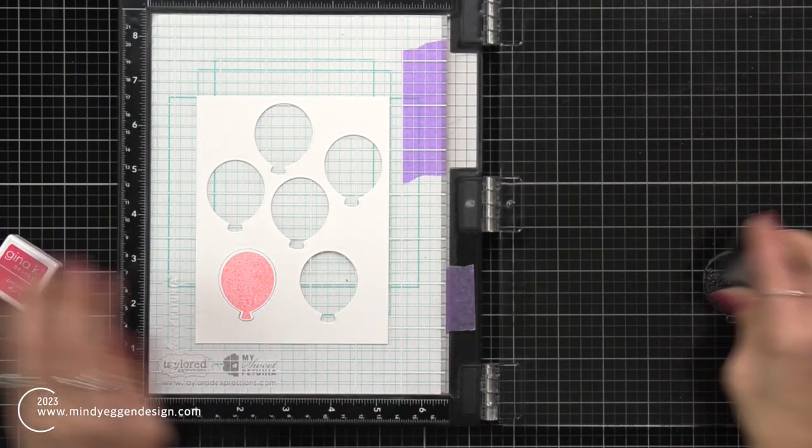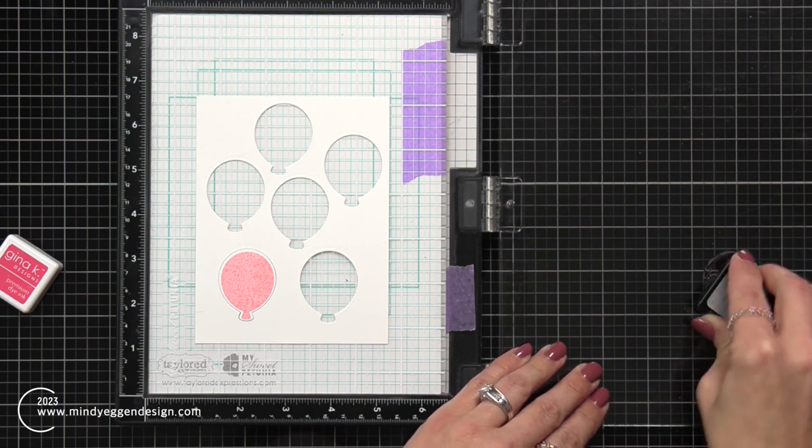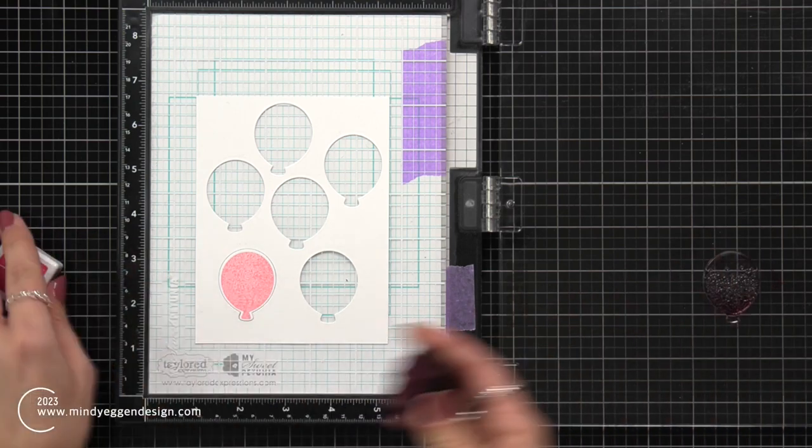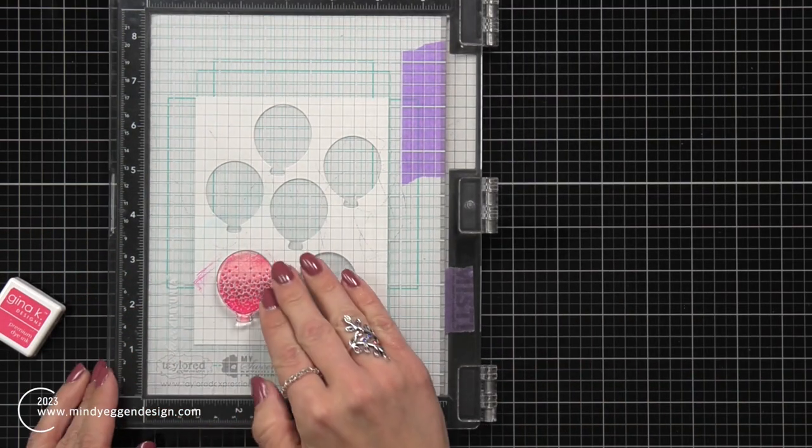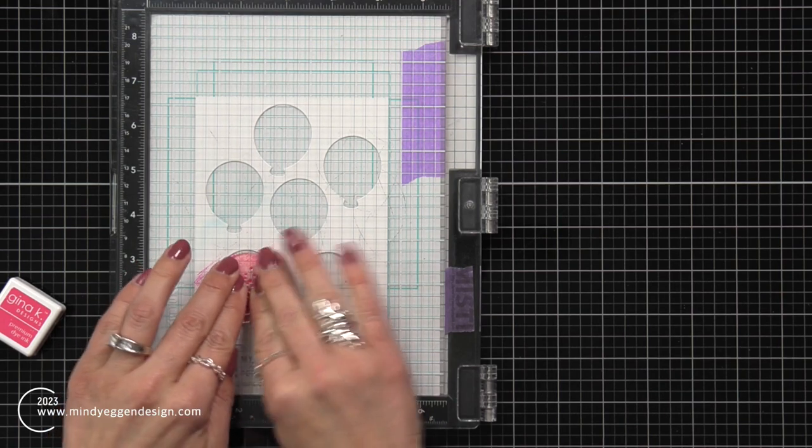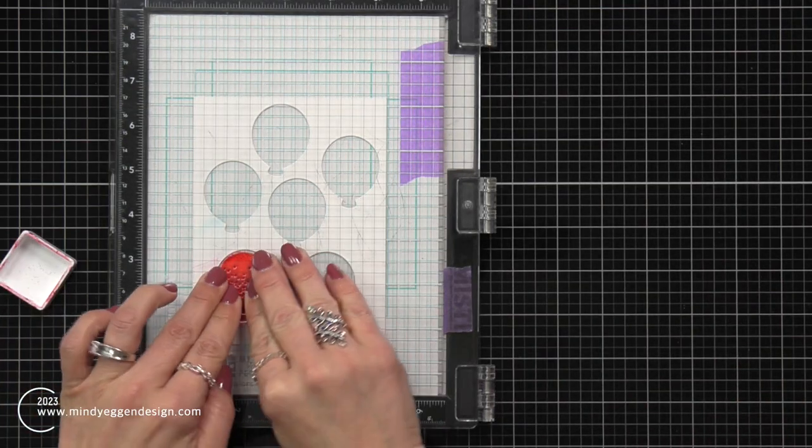All my solid images are done so I'm bringing in that additional element which is these little sprinkles at the bottom of the balloon. I lined that up over the open area of that template and then picked it up with the door of the Misti. So now I can bring back all of those stamped balloons, pop them back in, and stamp this in a darker color.